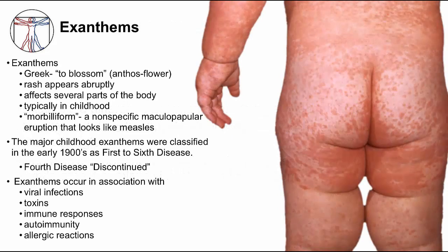The title of this video has the words exanthems and enanthems — so what are these? Exanthems are skin rashes, and enanthems are lesions of mucosal surfaces. Exanthem means 'to blossom' in Greek, referring to the abruptness of the rash appearance, which affects multiple parts of the body. Exanthems typically refer to rashes seen in childhood. Another commonly used term is morbilliform, which describes a nonspecific macular papular eruption that looks like measles, as shown in the image.